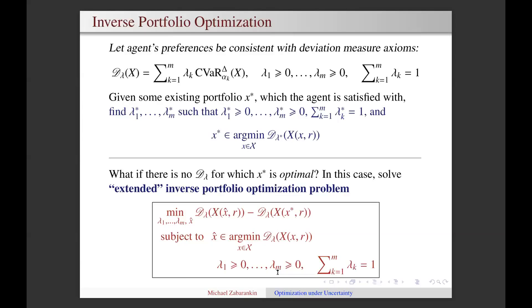The likely issue is that the portfolio x star could be sufficiently good but not in fact a true optimal portfolio. That means that the inverse portfolio optimization problem may have no solution. What could be done in this case is to solve an extended inverse portfolio optimization problem, which finds lambdas and a true optimal portfolio x hat such that x hat is better than x star in terms of the unknown deviation measure.